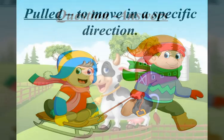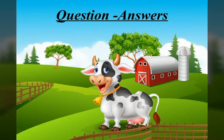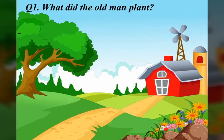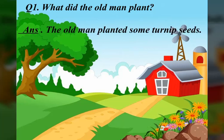So kids, now it's time for sub-question answers. Let's find out the answers of the given questions. What did the old man plant? The old man planted some turnip seeds.